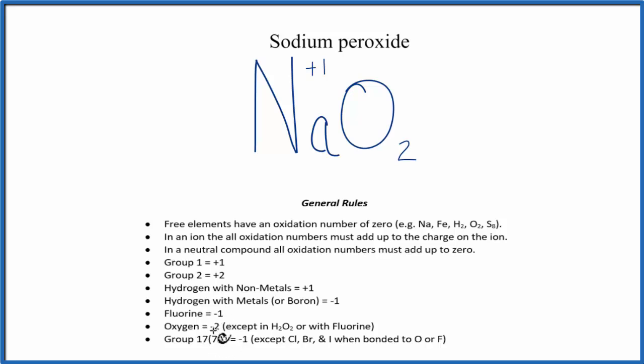Oxygen's almost always -2, except in the case of peroxides, so it's not going to be -2 here. We're going to have to figure it out based on this rule here, that in a neutral compound all the oxidation numbers are going to add up to 0.